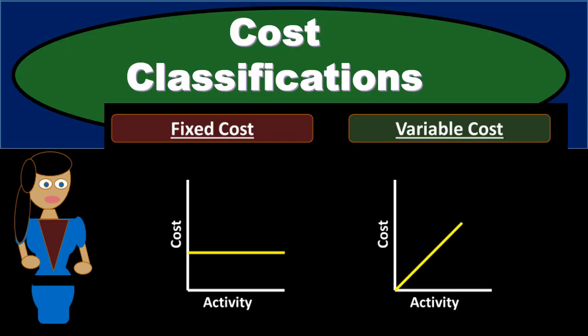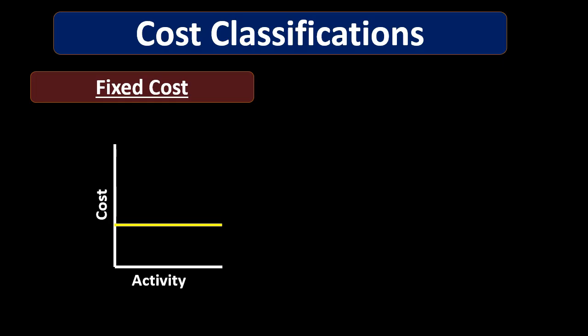There are a few different ways that we can classify costs and they all have their pros and cons, their benefits to classification in different ways. We're going to classify costs here by behavior. Costs do have behavior in that they act in certain ways in relation to other activities. We're going to classify the two types of costs here being fixed costs and variable costs.